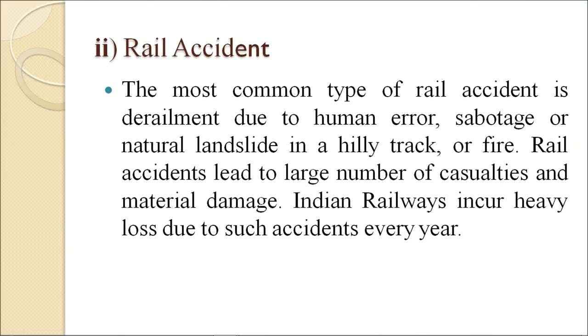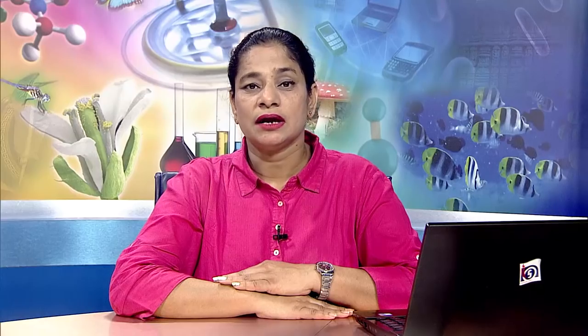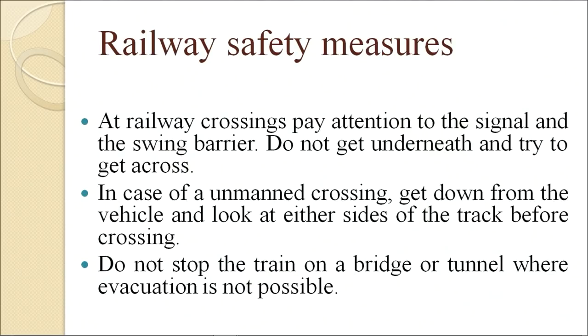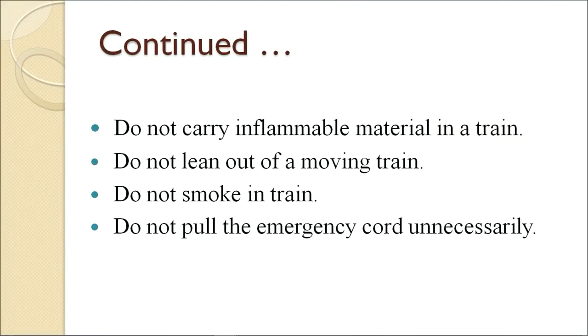Now we come to rail accidents. The most common type of rail accident is derailment due to human error, sabotage, natural landslide on a hilly track, or fire. Rail accidents lead to a large number of casualties and material damage; Indian railways incur heavy losses due to such accidents every year. Railway safety measures include: at railway crossings, pay attention to signals and swing barriers; at unmanned crossings, get down and look both ways before crossing; don't stop a train on a bridge or in a tunnel where evacuation is not possible; don't carry inflammable material in a train; don't lean out of a moving train; don't smoke in a train; don't pull the emergency cord unnecessarily.